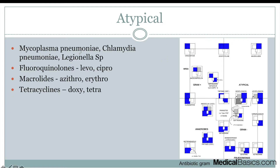Atypicals are going to be our mycoplasma, chlamydia, and Legionella species. When we're thinking of atypicals, most commonly we're thinking of pneumonia. The treatments to remember are doxycycline as number one, azithromycin for macrolides, and if needed, levofloxacin or ciprofloxacin — though those are heavier guns that cover more. Always remember doxycycline and azithromycin if you can't remember anything else.